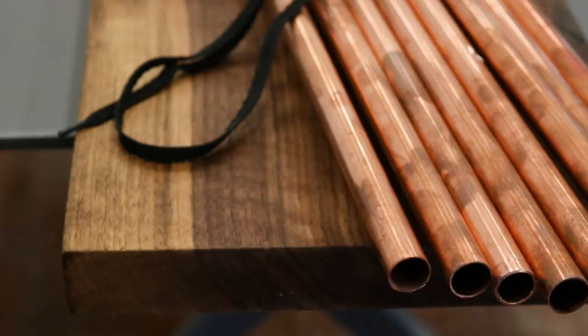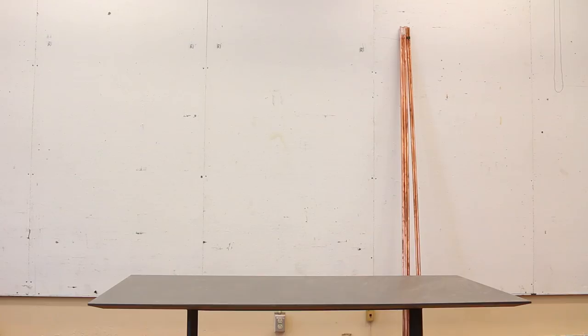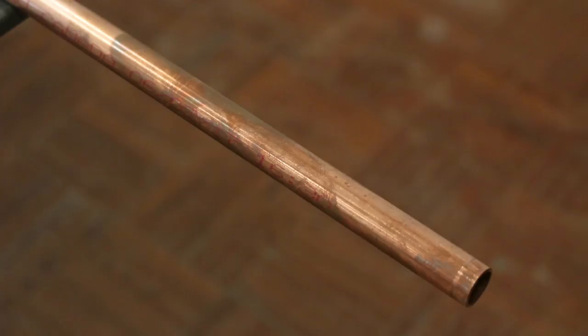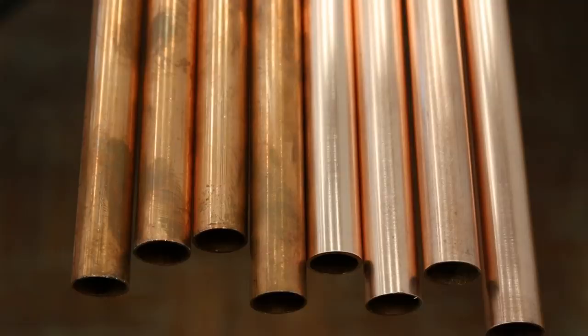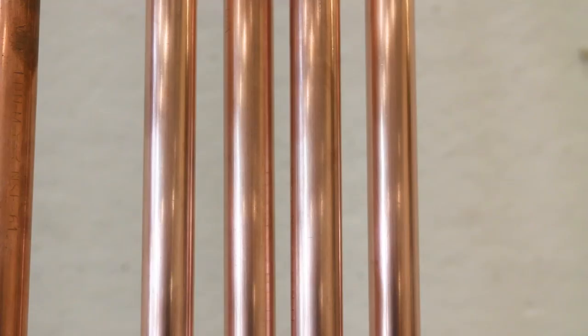This was my first time working with copper and I was pretty surprised by how easy it was to use. To get started, all I needed was some copper pipes, a tube cutter, and some Gorilla Glue. I also used some steel wool to polish everything off and get that nice rose gold finish.